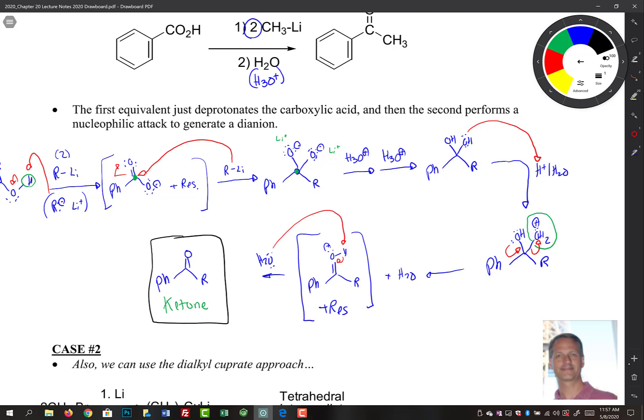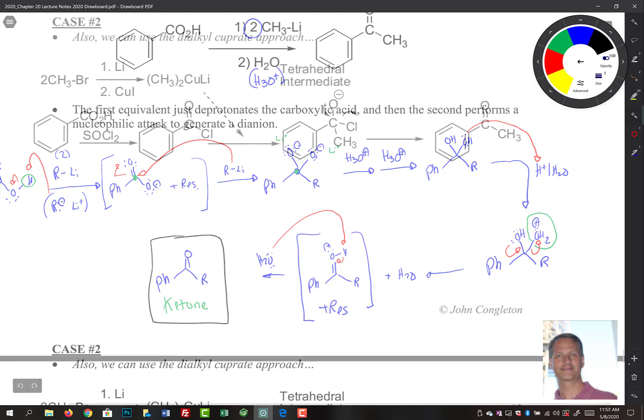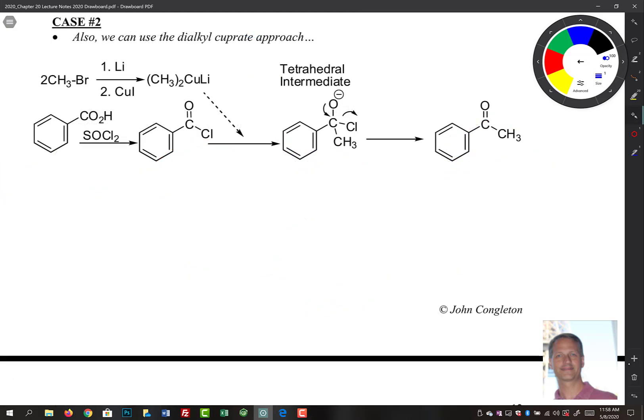In the second case, we can use a lithium dialkyl cuprate. It's just a different approach, but notice that our product here is a ketone. If we look down below, we see a different route that ends up with the same product. Here we have a carboxylic acid, thionyl chloride that makes your acid chloride here. Now we make the lithium dialkyl cuprate, which then reacts with this to form a tetrahedral intermediate, and then it gives us a ketone. Reaction stops there. Notice those two products we saw in case one and case two—those are the same, two different routes of accomplishing that transformation.